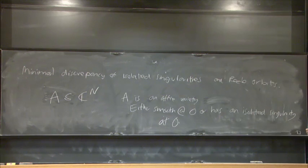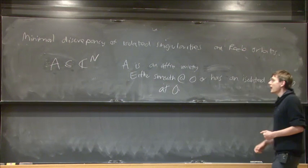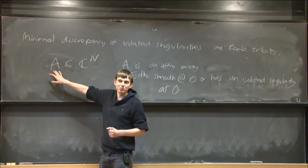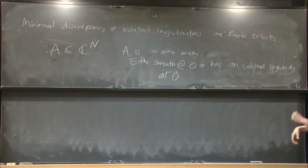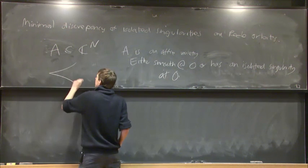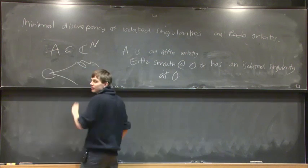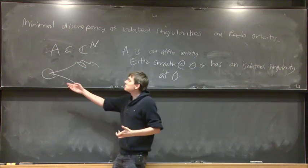If you take the polynomials defining A and look at a small neighborhood of zero, and look at the Jacobian of those polynomials, that has constant rank near zero, but the rank could jump down if you hit zero. A may behave in a funny way here, but I'm only interested in the germ of A at zero.